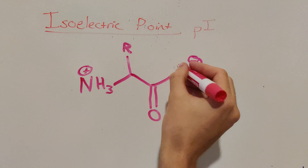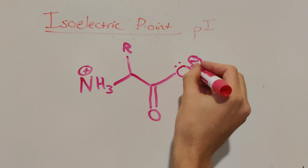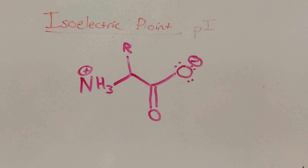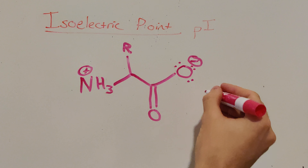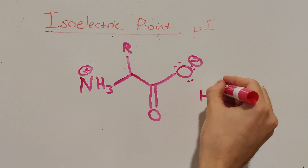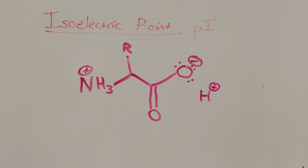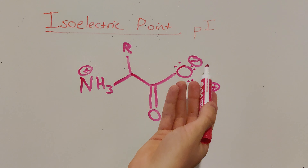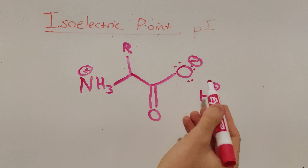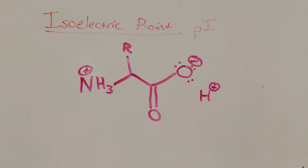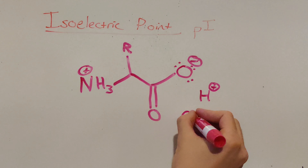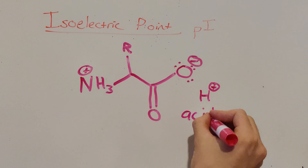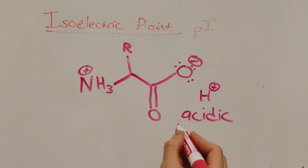Now we're going to review the carboxylic acids. As we notice, this group has a negative charge because it's been deprotonated. In anything but the most acidic environments, your carboxylic acid is going to stay deprotonated, because carboxylic acids — and any acids in general — are very strong proton donors. Therefore, carboxylic acids are going to be considered acidic.